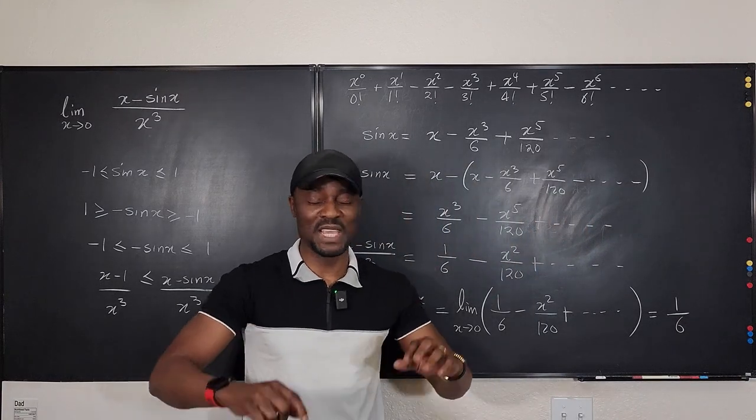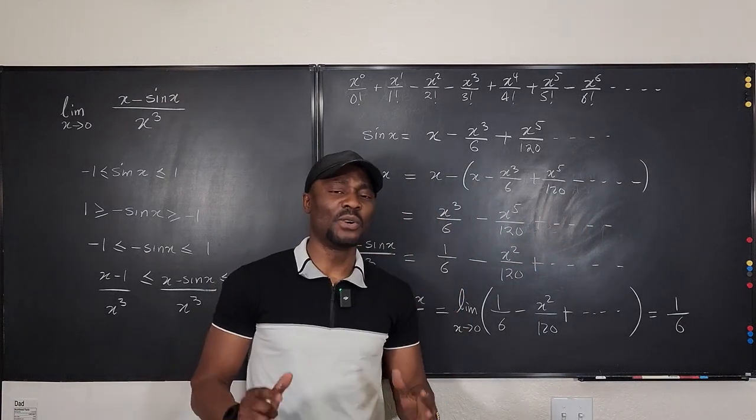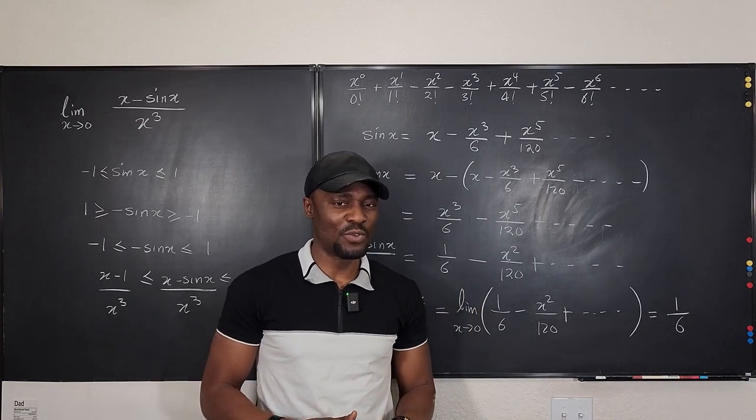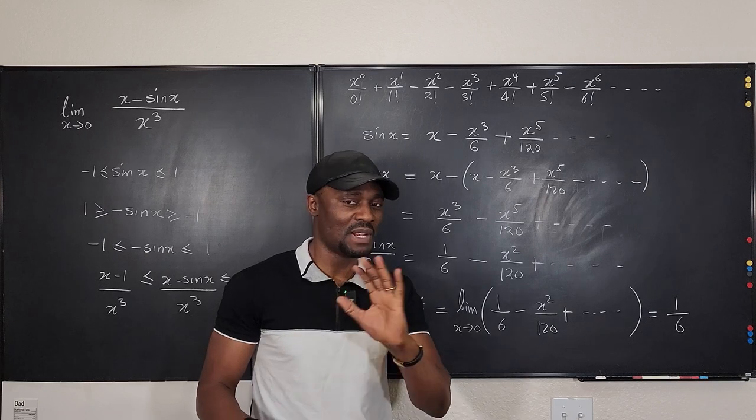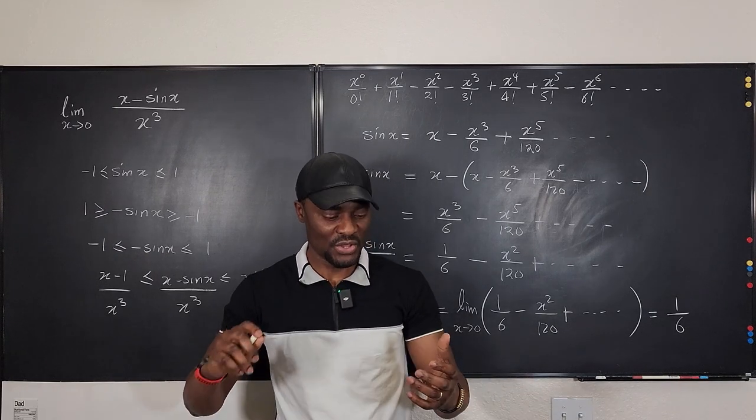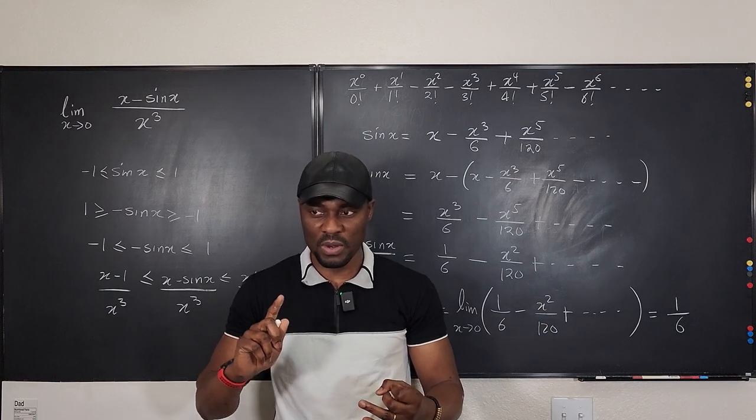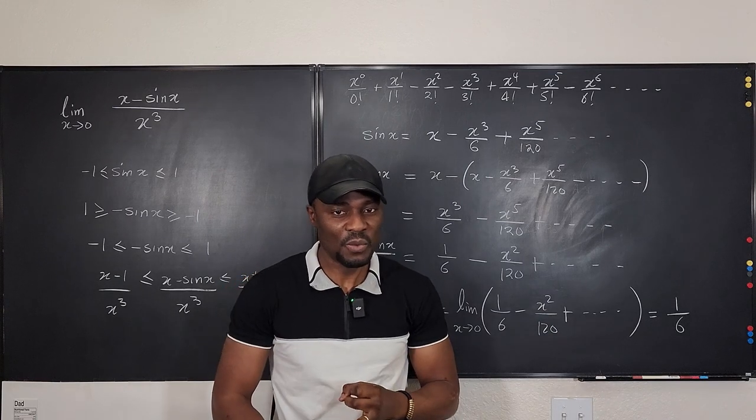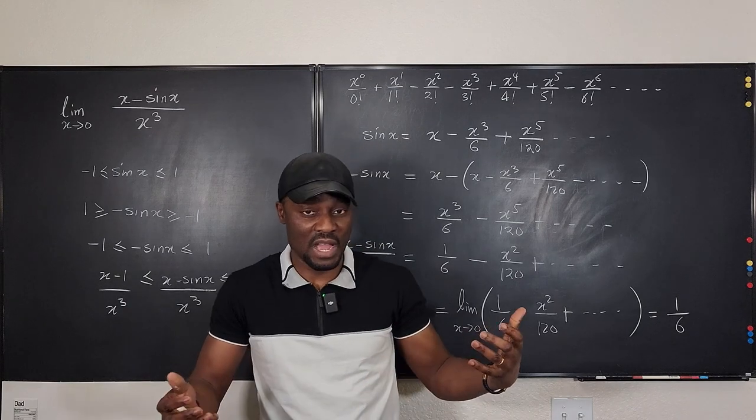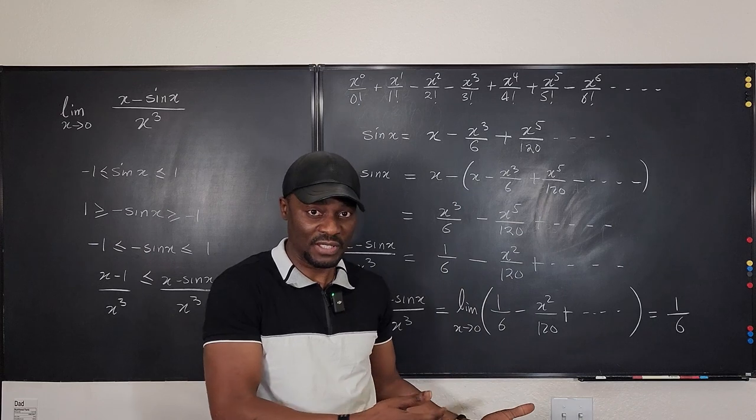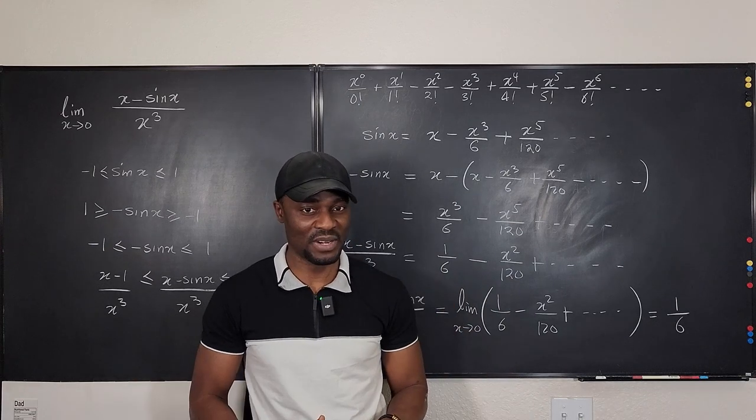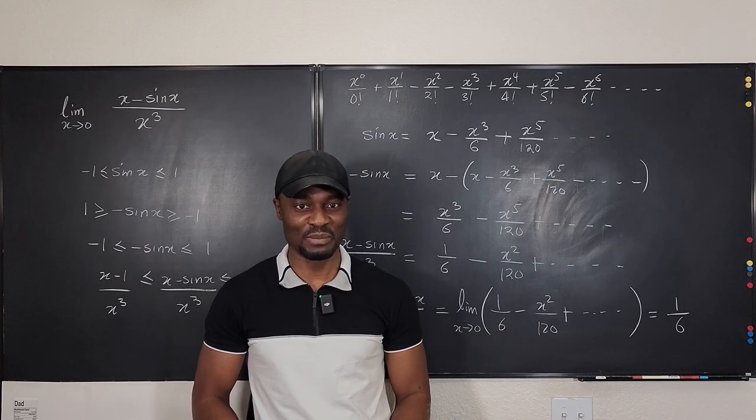There's another method you can use, the triple angle expansion formula that you could use where you have to do a substitution. Maybe in another video I'm going to let you see that. So whenever you get a problem where you cannot use L'Hôpital's rule or squeeze theorem is not working, then you want to go to the Maclaurin series. This is the Taylor series, but it becomes Maclaurin series if you're centered at zero. Never stop learning, because those who stop learning have stopped living. Bye-bye.